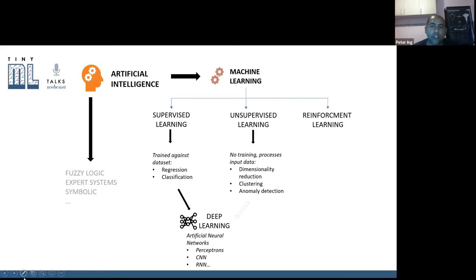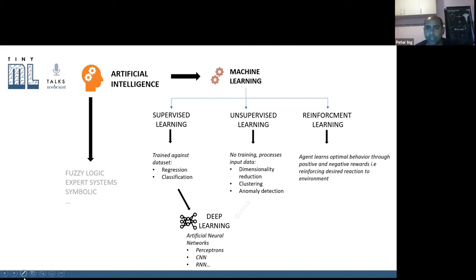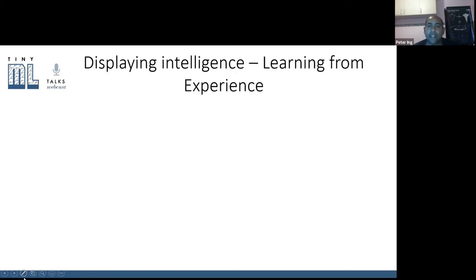Reinforcement learning is pretty much how we learn as children or as animals. When you step on a nail you get sore, you put your foot in a hot bath it hurts, and you learn not to do that again. You have an agent that learns from the environment through positive and negative rewards, learning which behaviours to optimize. A good example is AWS DeepRacer where a self-driving car learns to stay in the center of the lane through reinforcement — rewarding and penalizing itself based on performance.